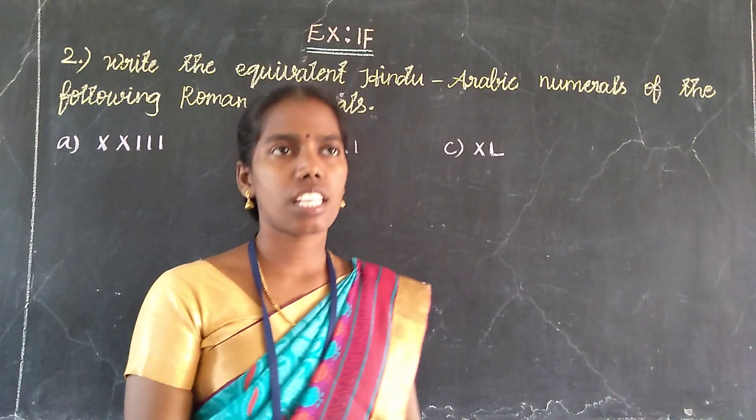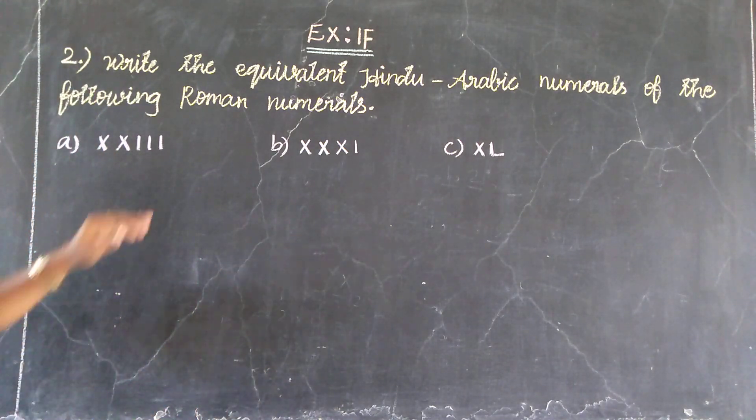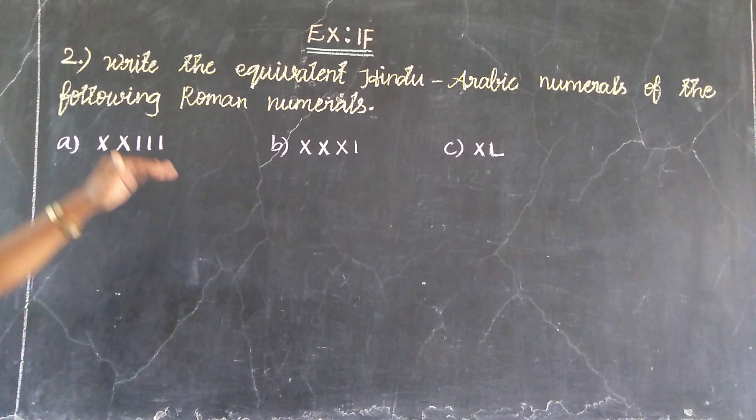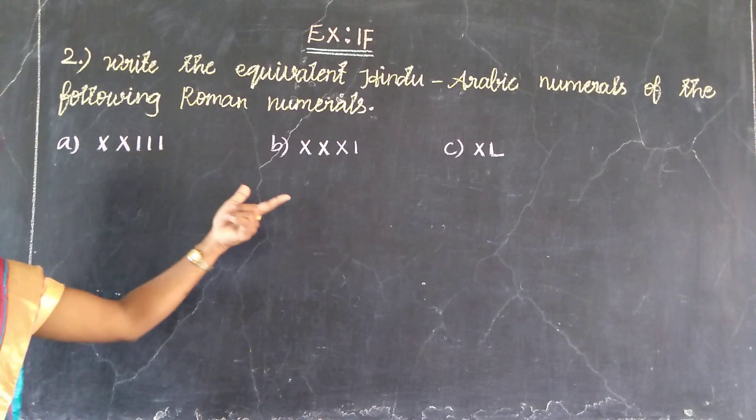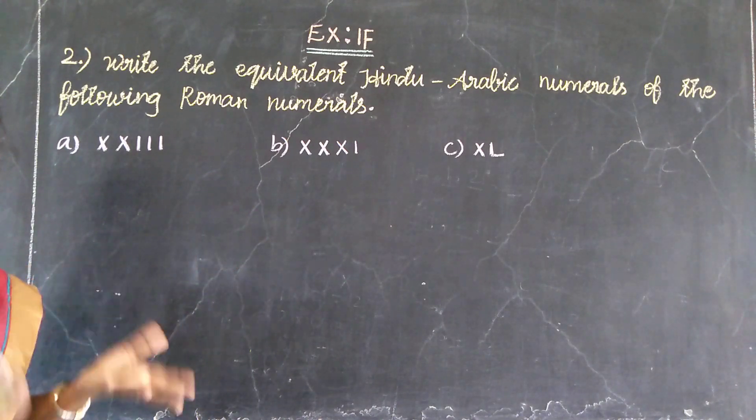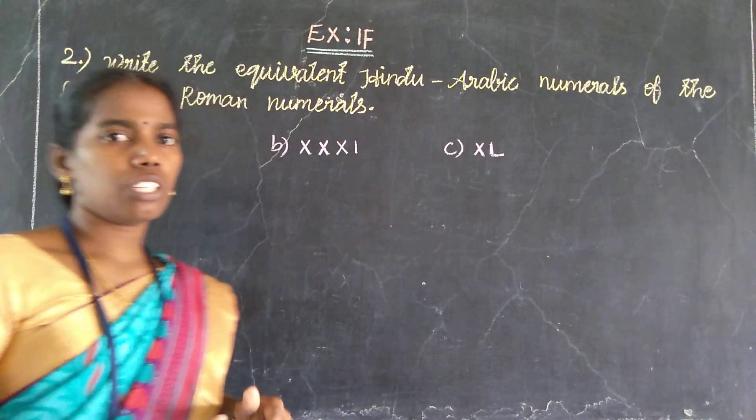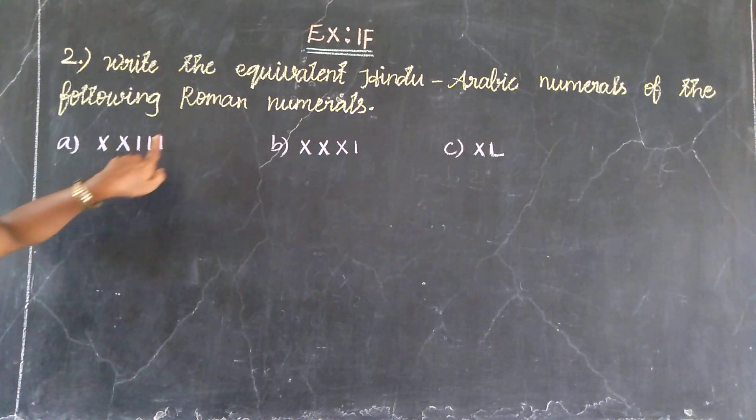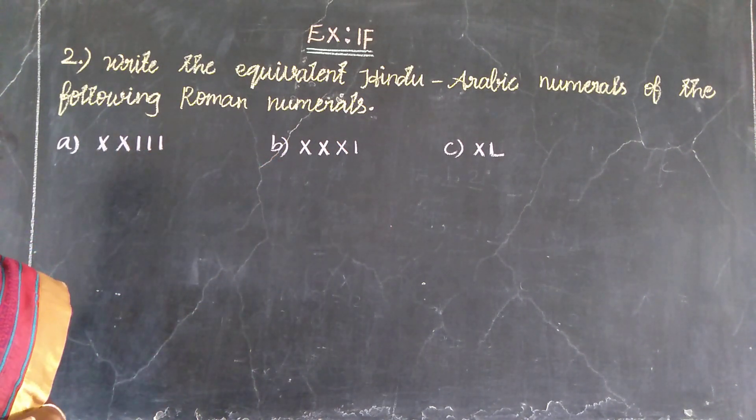Welcome students. This is Exercise 1F, second Roman problem. They write the equivalent Hindu-Arabic numerals of the following Roman numerals. In this Roman numerals, equal on Hindu-Arabic numerals are final. They give two Roman numerals. Roman numerals equal on Hindu-Arabic numbers are useful.